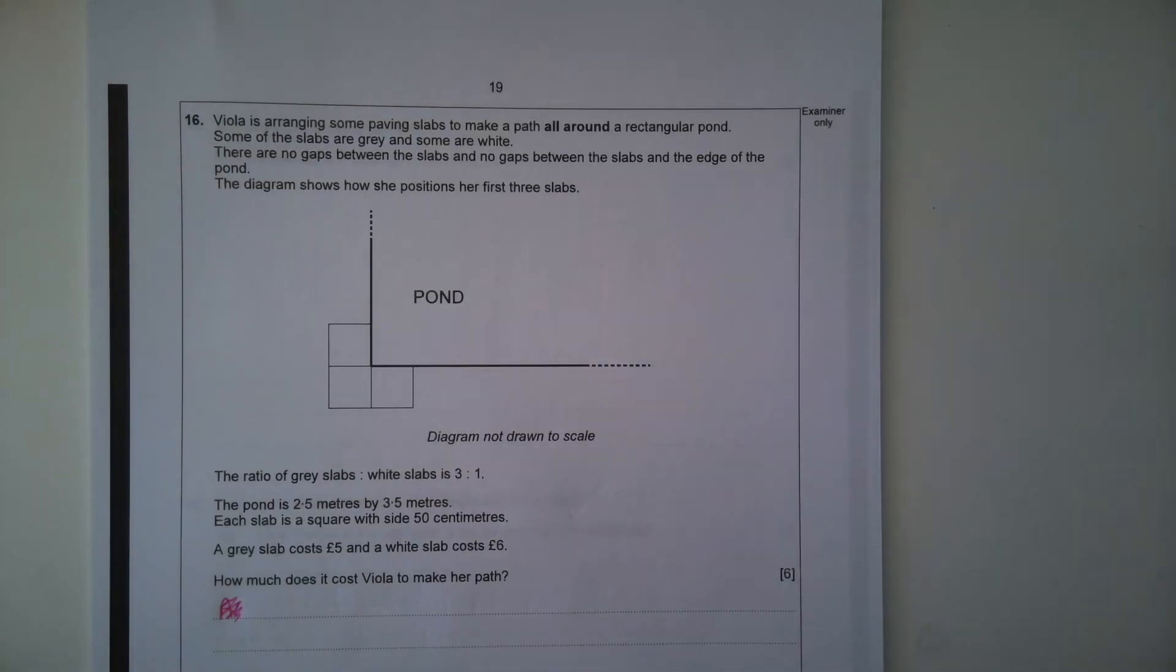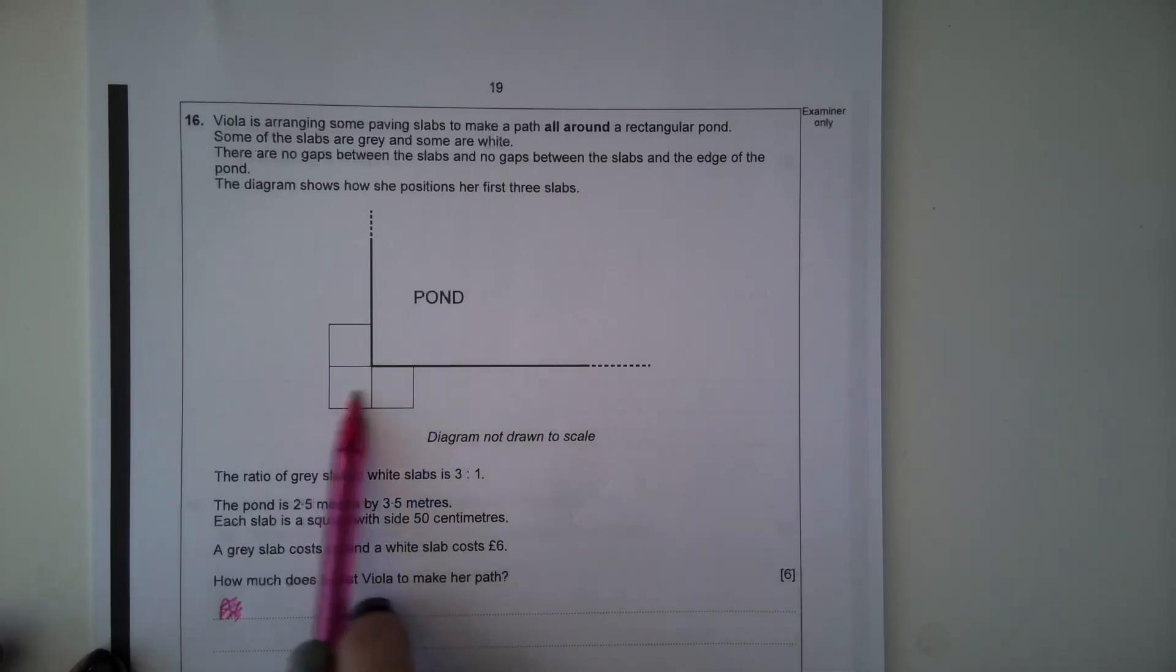Viola is arranging some paving slabs to make a path all around a rectangular pond. Some of the slabs are grey and some are white. There are no gaps between the slabs and no gaps between the slabs in the edge of the pond. The diagram shows how she positions her first three slabs. So we've got the first three slabs here.